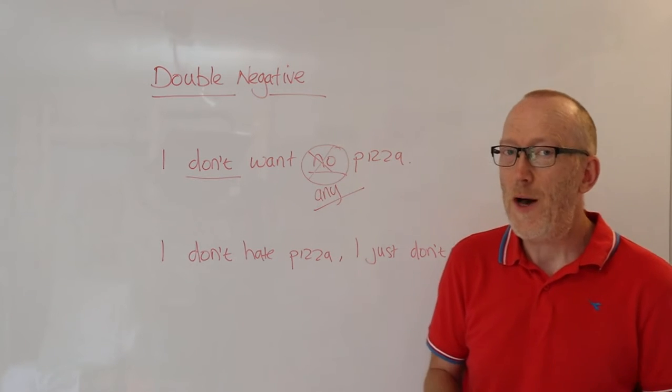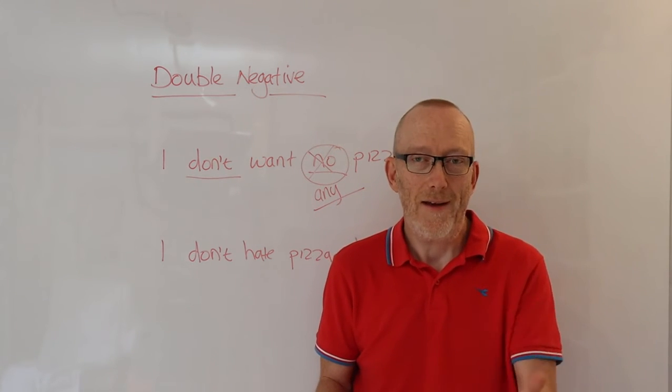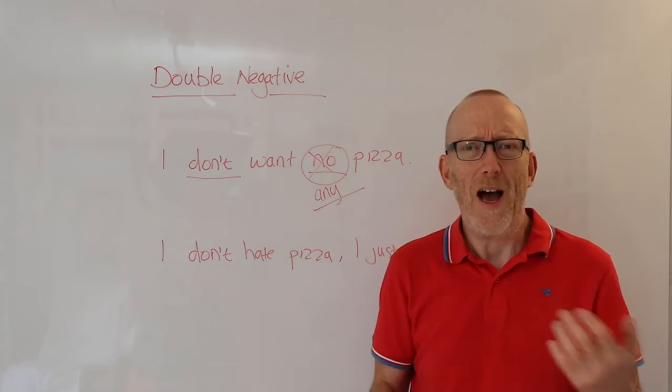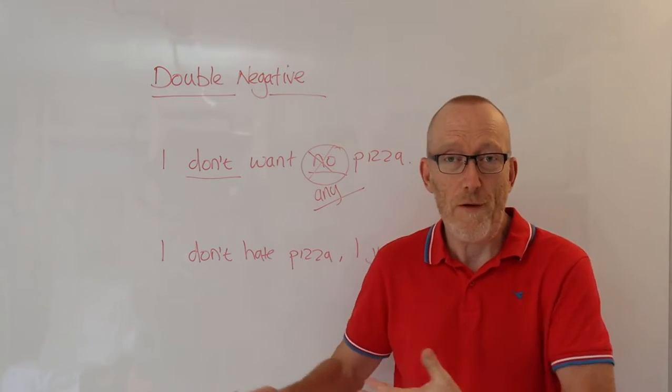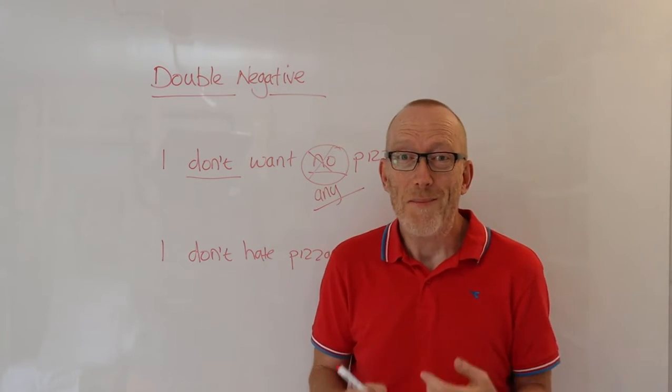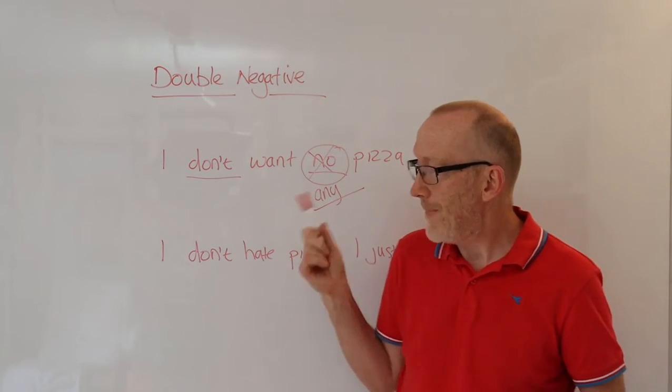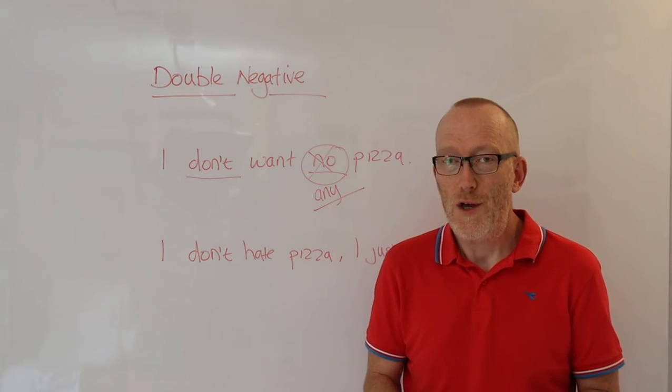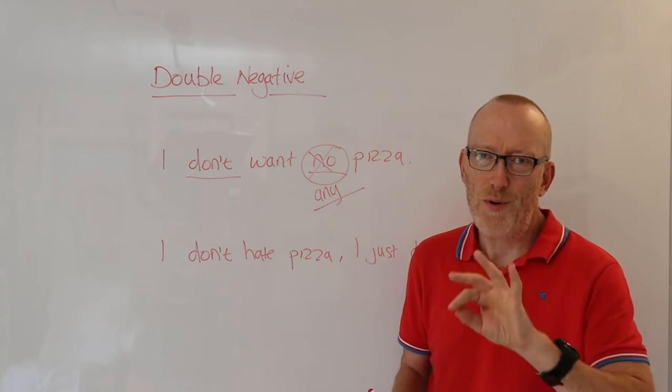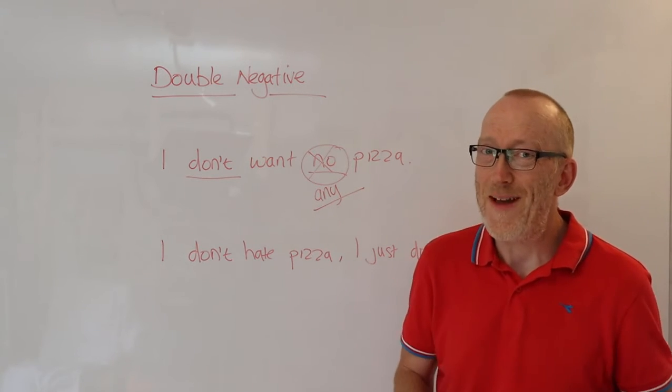But the thing is, in certain parts of the UK, you might actually hear people say, I don't want no pizza. Because colloquially, or regionally, it's acceptable. Although grammatically it is wrong. I might use a similar phrase myself on occasion as well. I don't want no pizza today. Thanks. Grammatically completely wrong, but it is sometimes a very natural way to use the language. But you do have to be really careful about your double negatives, especially if you are writing or you're preparing for some sort of exam like your IELTS.